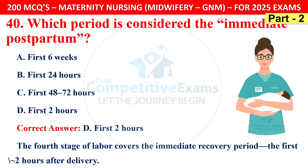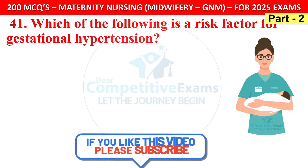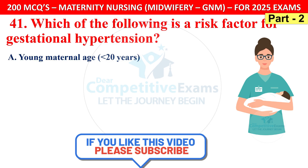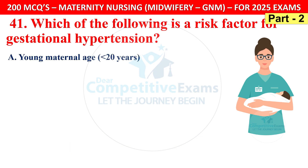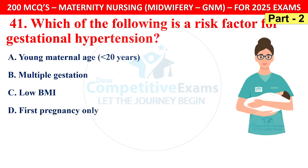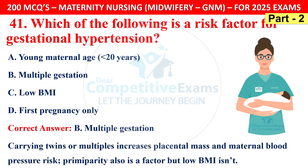Question 41: Which of the following is a risk factor for gestational hypertension? Options are young maternal age under 20 years, multiple gestation, low BMI, or first pregnancy only. The correct answer is B — multiple gestation. Carrying twins or multiples increases placental mass and maternal blood pressure risk. Primiparity is also a factor, but low BMI is not.